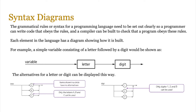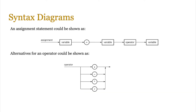The arrows signify the direction of travel, so the variable consists of a letter followed by a digit. Digits can only be 1, 2, or 3. So if I wanted to follow this rule, my variable can be A1, A2, or A3, B1, B2, or B3, C1, C2, or C3 — it cannot be anything else. An assignment statement could be shown as: an assignment is when a variable equals another variable, an operator, and another variable. For example, total is equal to total plus sum. Alternatives for an operator could be plus, minus, star, or divide. So syntax diagrams are pretty easy to create and read.